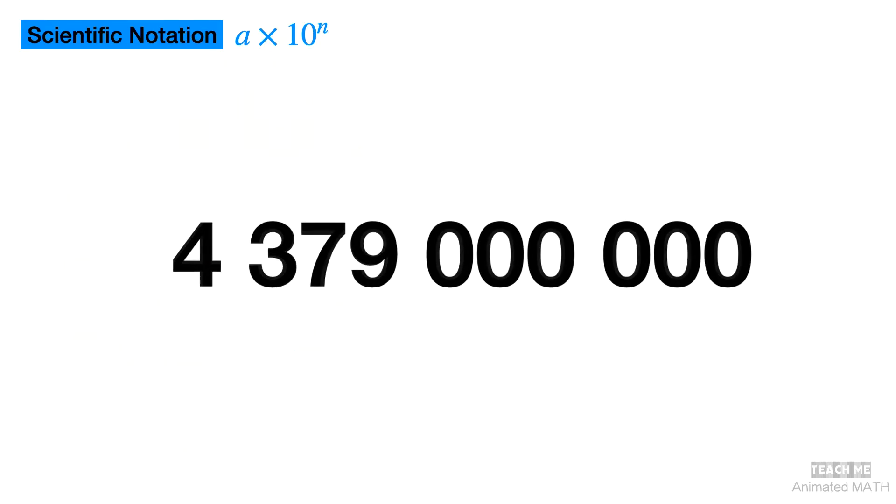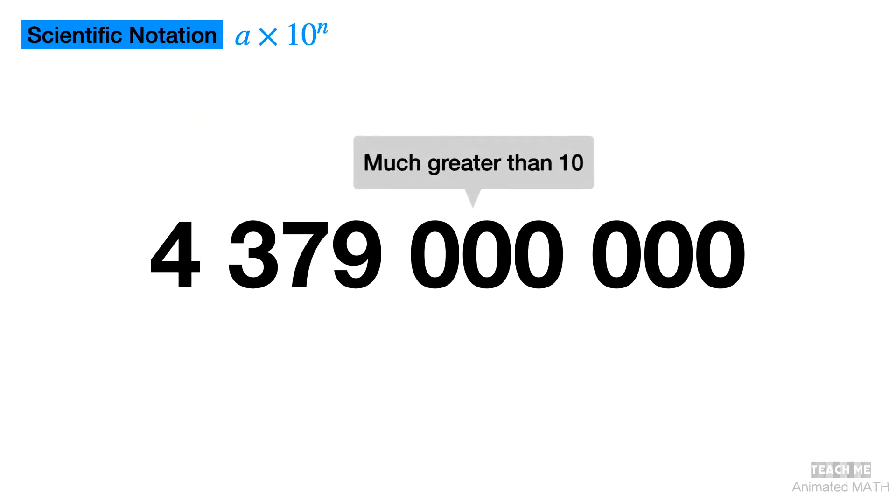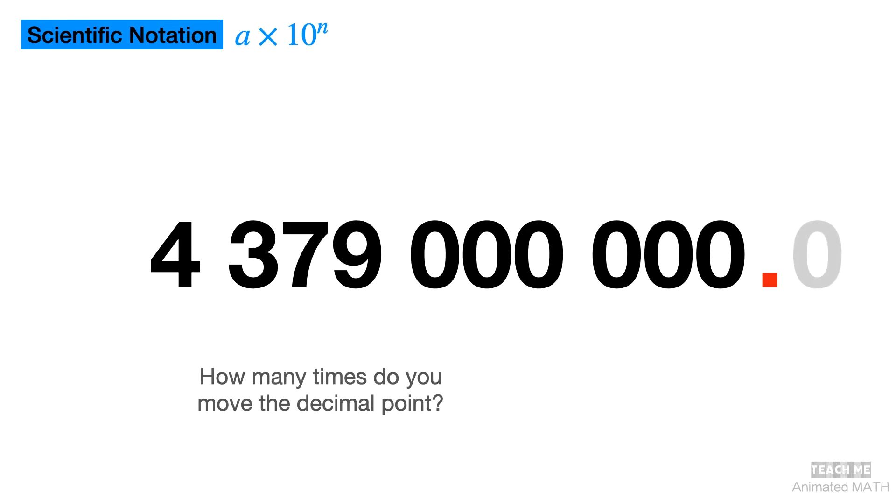Since the number is much bigger than 10, we'll be using a positive exponent for base 10. This means n is a positive integer. To figure out the value of n, you have to think: How many places do I move the decimal point? Since the number is greater than 10, we move the decimal point to the left. Let's count how many times that is.